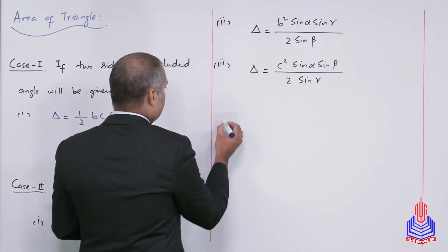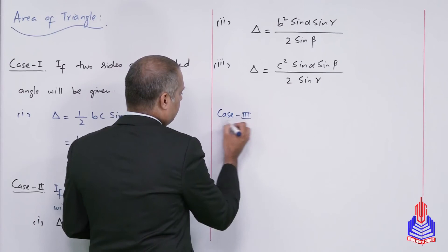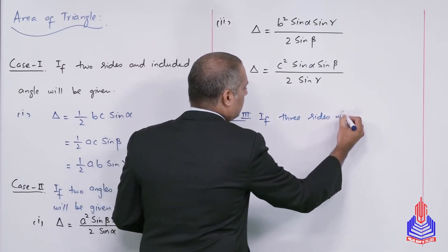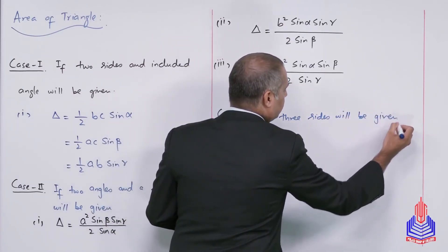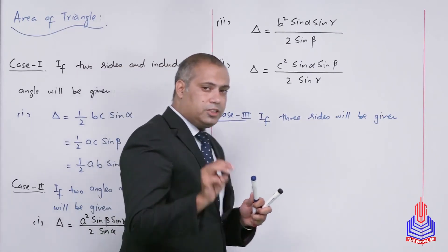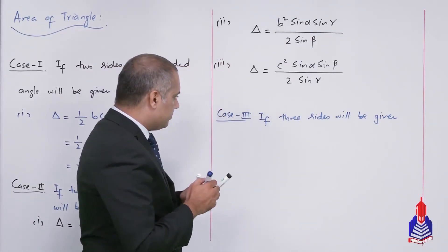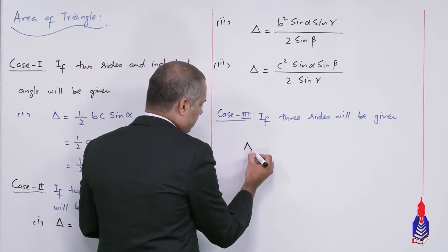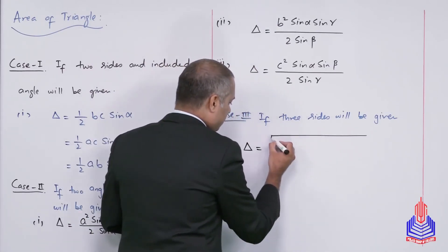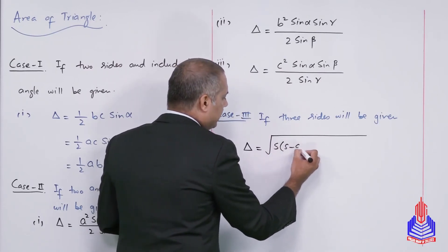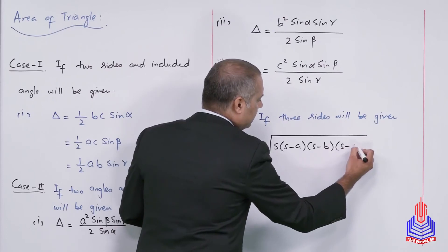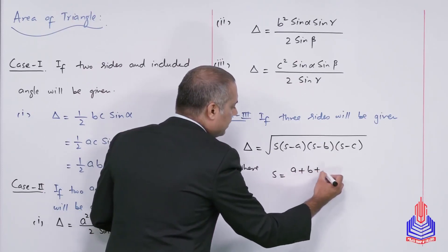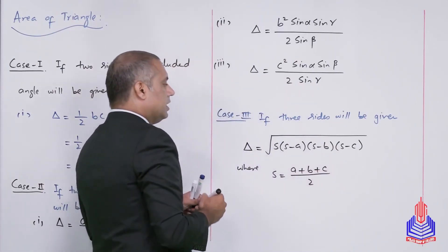Case 3: if three sides are given, we use Hero's formula: area = √[s(s−a)(s−b)(s−c)], where s = (a + b + c) / 2. This is our third case.